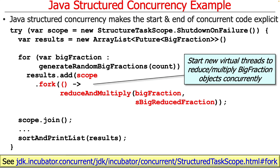We then allocate an array of futures to BigFractions stored in a variable called results. We iterate through a large number of random BigFractions up to count in size, and for each one we fork a new virtual thread to reduce and multiply that BigFraction by some constant — essentially a long-running computation. For each BigFraction, we make a new virtual thread, as we saw in the previous video we can make lots and lots of them. The return value of fork is a Future of type T — in this case BigFraction — so we end up with an array of futures to BigFractions, which are proxies for computations running in those virtual threads in the background.